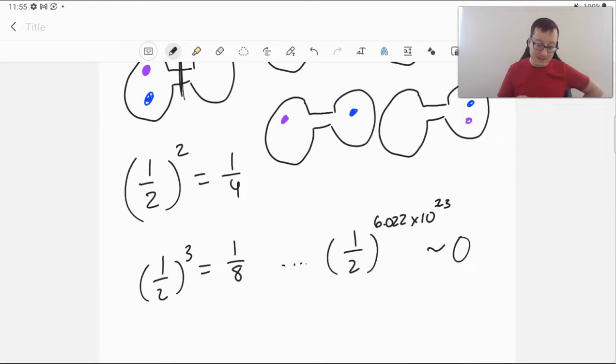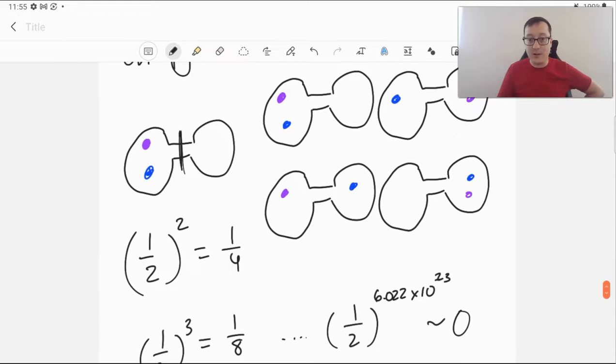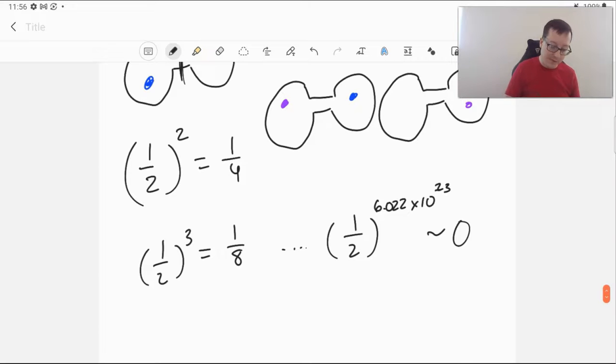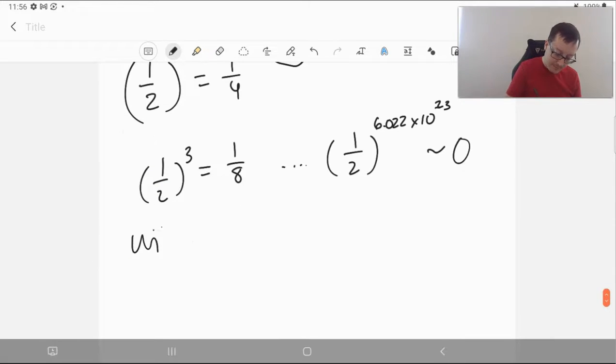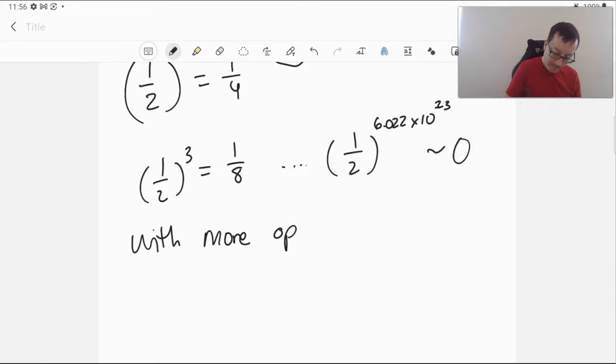So we see that the probability for something to be organized decreases with the number of options available. As we kept adding more and more molecules, the probability of them all being on the same side of the flask is very, very, very small. It gets smaller and smaller as we do that. And that's the idea here, is that we are increasing the number of options. With more options, the chance for something organized decreases. Disorder, or entropy, increases.